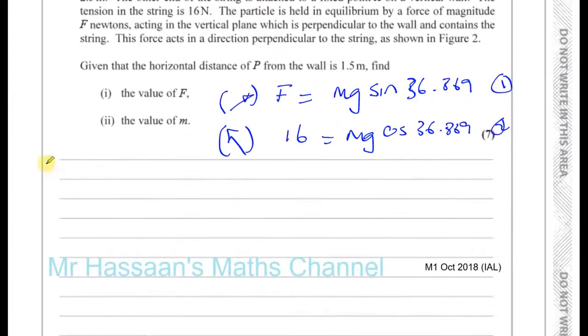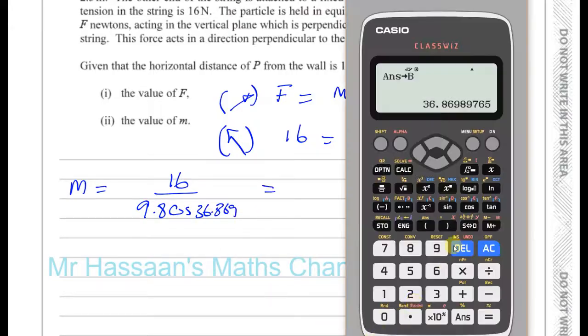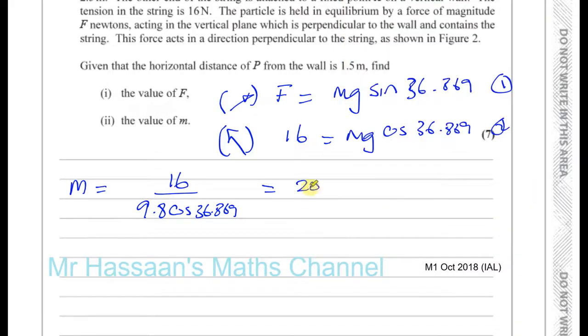So from the second equation here, I can find what M is. M is 16 over G, which is 9.8 times cosine of 36.869. So I can say 16 over 9.8 times cosine of my answer that we got before. That gives me 2.04 kilograms. That's what M is. We can write that as 2.0 if you want, because we can use 3SF or 2SF.